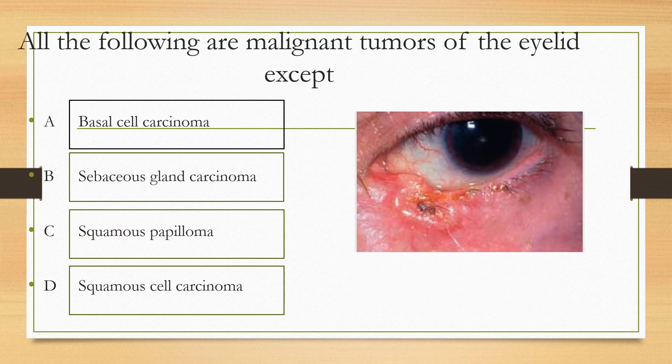All the following are malignant tumours of the eyelid except: option A basal cell carcinoma, option B sebaceous gland carcinoma, option C squamous papilloma, option D squamous cell carcinoma. The answer is option C, squamous papilloma, which is a benign condition. The rest of the options are malignant conditions.